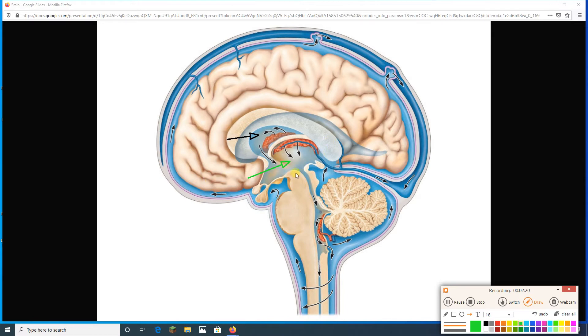Then the CSF goes down the cerebral aqueduct, all the way down like this arrow here, into the fourth ventricle. The fourth ventricle is going to then also make its own CSF. And from the fourth ventricle, CSF can go down through the central canal of the spinal cord, but also CSF can leave the fourth ventricle.